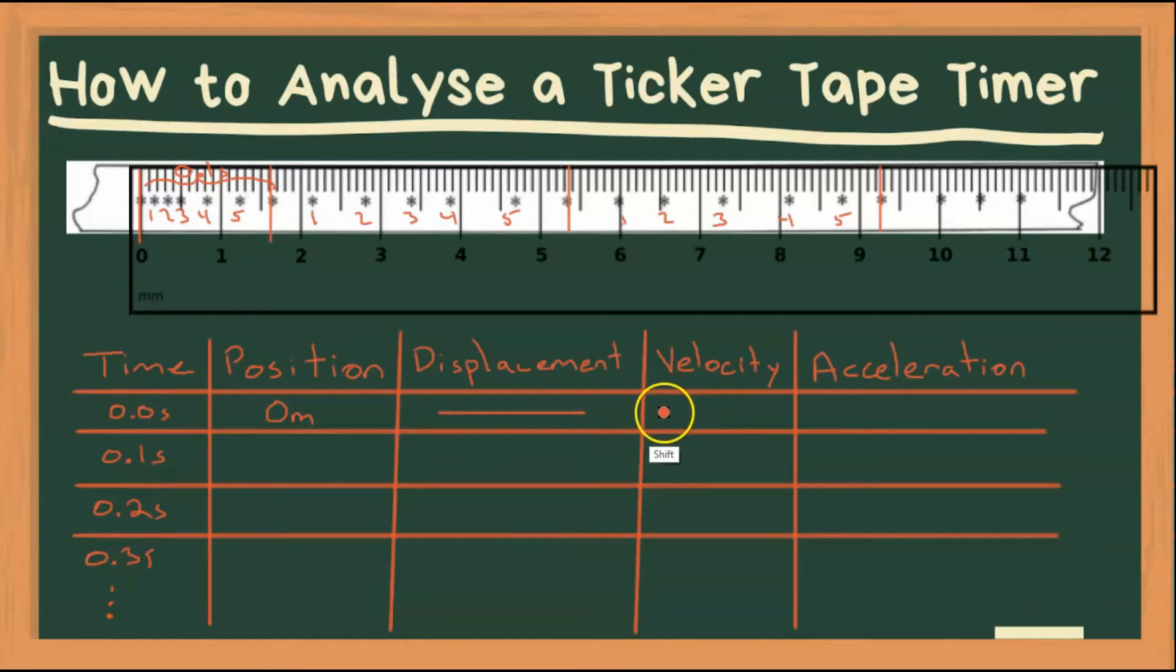We don't have any displacement because that's change in position. We haven't had any changes yet. Same with velocity, which is displacement over time, and acceleration, which is change in velocity over time. So let's look at our 0.1 mark right here. That looks like it's occurring at 1.6 centimeters.